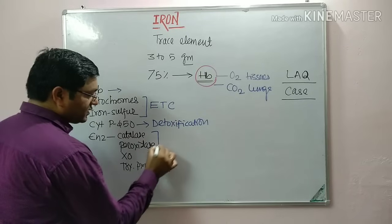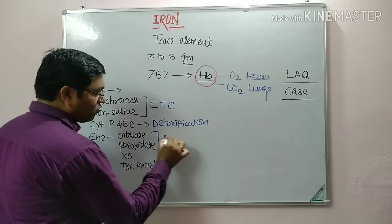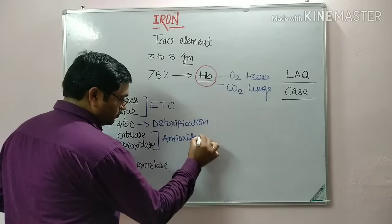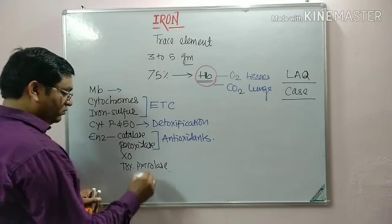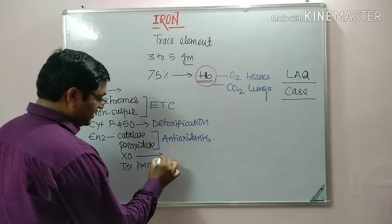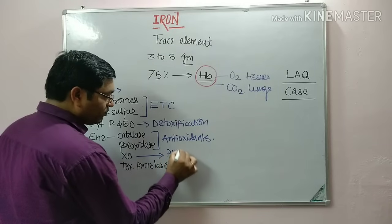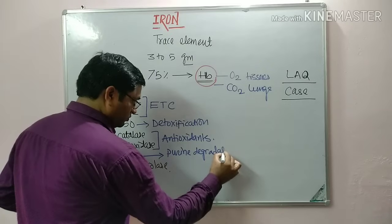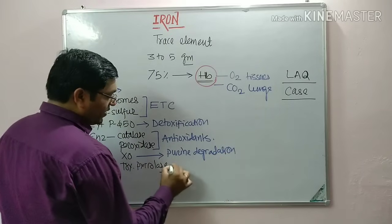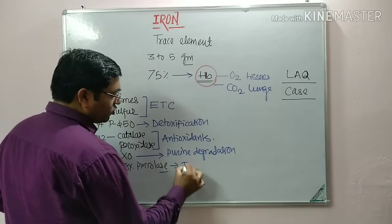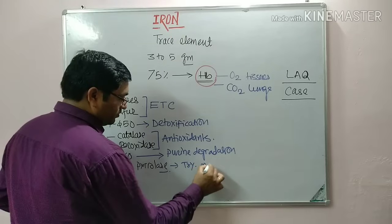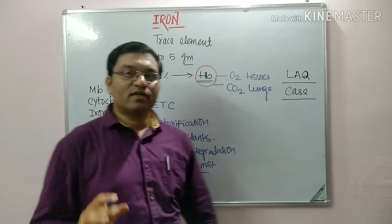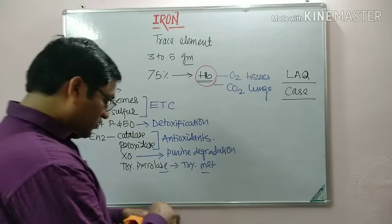Catalase and peroxidase are important as antioxidants. Xanthine oxidase is involved in purine degradation. Tryptophan pyrolase is important in tryptophan metabolism. These are the important functions of iron in our body.